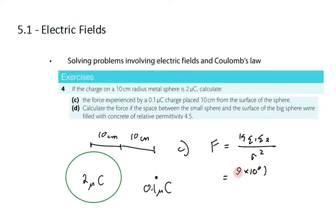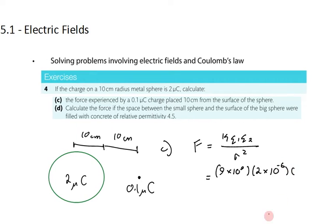9 times 10 to the ninth. q1 is the charge of charge 1, 2 microcoulombs. And then we have the charge on charge 2, a tenth of a microcoulomb. Divide that by their separation, which is 20 centimeters.